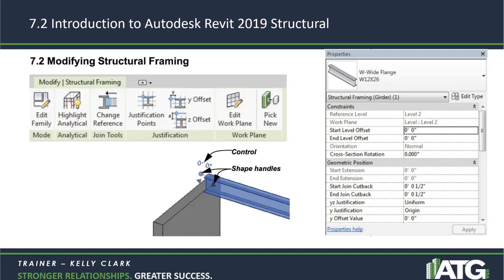Modifications can be made by using graphical controls and shape handles. The properties panel is where you can find other special settings, such as the YZ justification, Y justification, and Y offset values. You can also utilize options from the ribbon. Once you select a member, you get these options available to you.